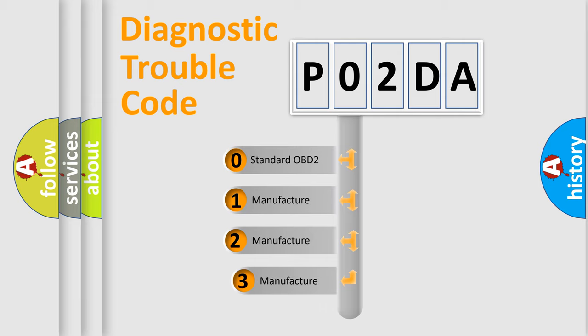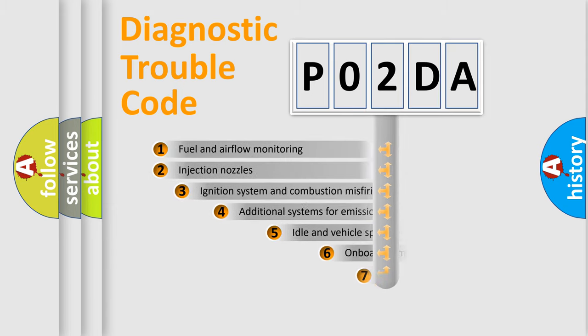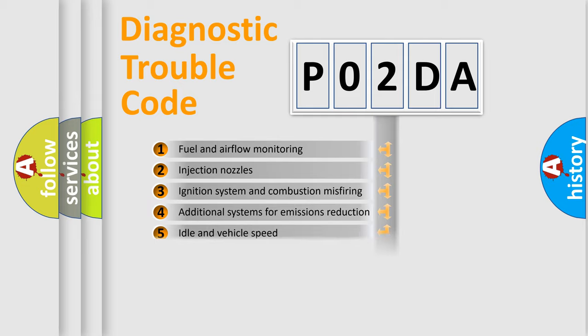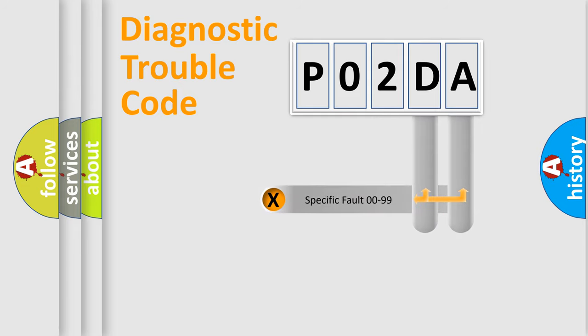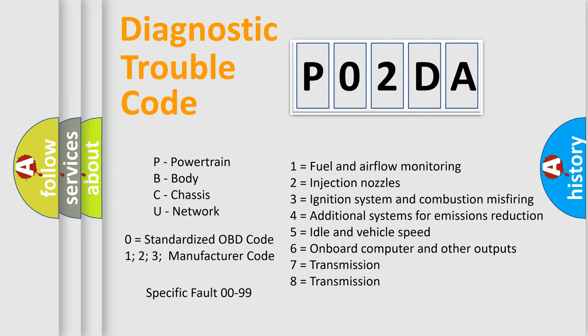If the second character is expressed as zero, it is a standardized error. In the case of numbers 1, 2, 3, it is a more precise expression of the car-specific error. The third character specifies a subset of errors. The distribution shown is valid only for the standardized DTC code. Only the last two characters define the specific fault of the group. Let's not forget that such a division is valid only if the other character code is expressed by the number zero.